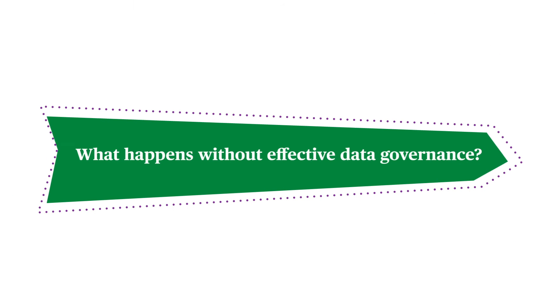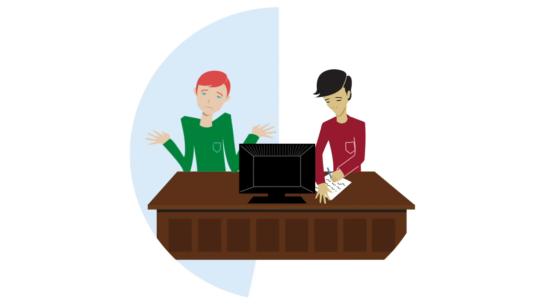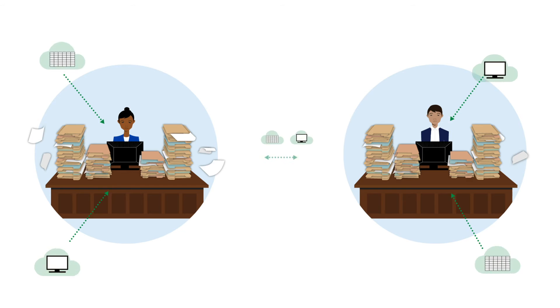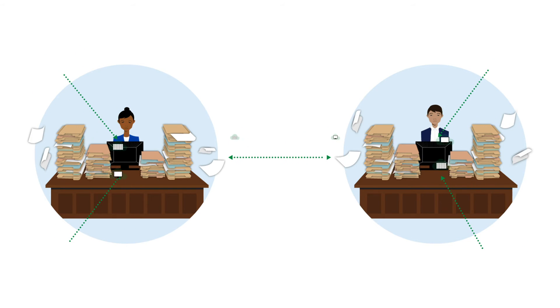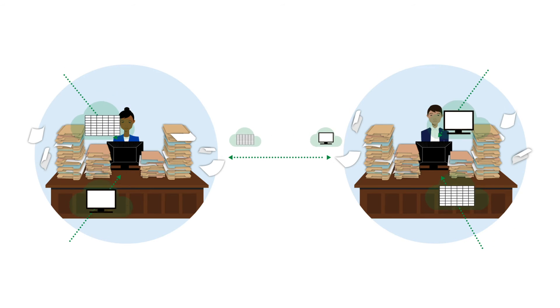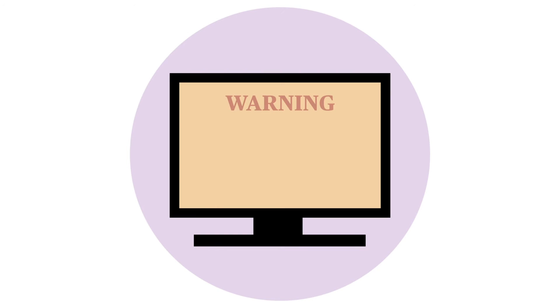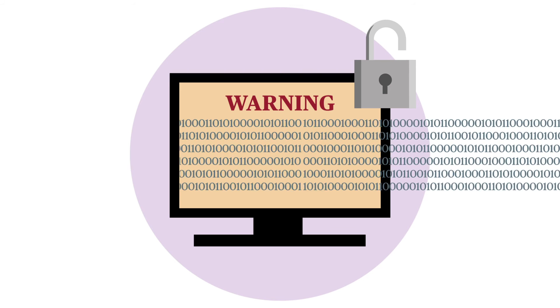What happens without effective data governance? Organizations without data governance programs face numerous risks. For example, decisions about data definitions may be made by people unfamiliar with policy or program requirements, making the data less useful to stakeholders. An absence of data governance may also cause multiple programs or agencies to collect and release similar data, which can increase staff burden and produce inconsistent information. Measures such as post-secondary enrollment may be reported differently, leading users to doubt whether the information is trustworthy. One of the biggest risks is a data breach, where data are released without adequate privacy protections.